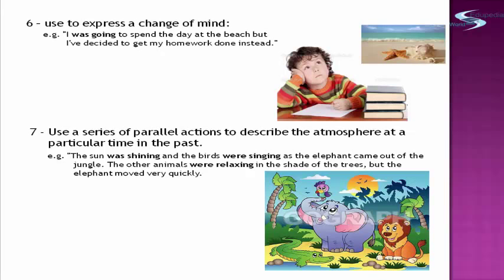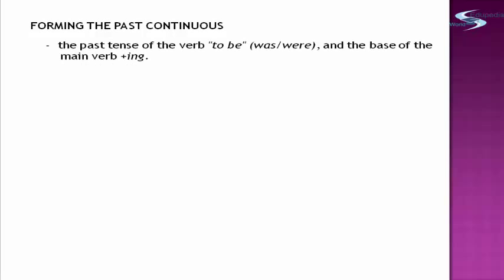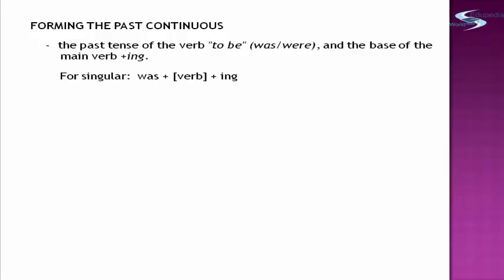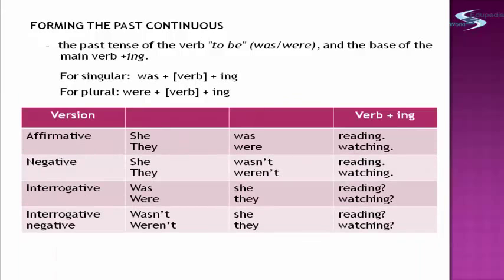The past tense of the verb 'to be' — which is 'was' or 'were' — plus the base of the main verb, plus '-ing.' So, the pattern for singular is: was + verb + ing. For plural: were + verb + ing. I will give you an example using the verbs 'read' and 'watch.'